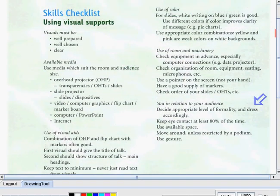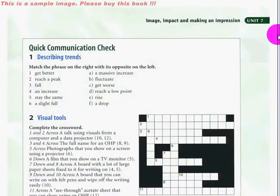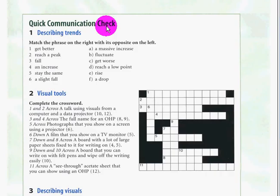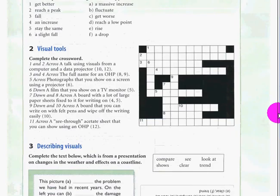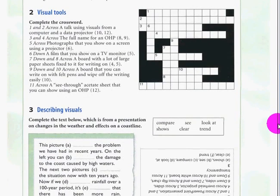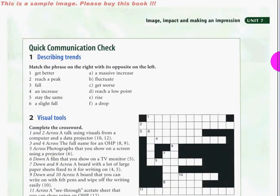And let's now have our exercises. Here it is, page 75. Quick communication check. Number one, describing trends, visual tools, and describing visuals. All you have to do is to answer the given questions today exercises.